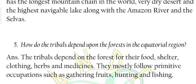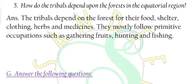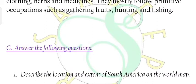Question 5: How do the tribals depend upon the forests in the equatorial region? Answer: The tribals depend on the forest for their food, shelter, clothing, herbs, and medicines. They mostly follow primitive occupations such as gathering fruits, hunting, and fishing.